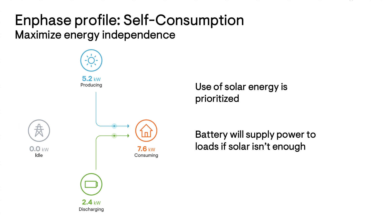The next profile option is self-consumption, which maximizes energy independence. Self-consumption prioritizes the use of solar energy by your home. If there is excess solar power it's stored in the battery. If your solar system isn't producing enough power for your home, the battery will make up the difference. You'll only use grid energy if your solar and battery can't provide enough power. In self-consumption mode you also have the option to export energy specifically during those high value hours of August and September evenings to earn credits from the utility. Choose this option if you would like to have the benefits of both energy independence and some bill savings.